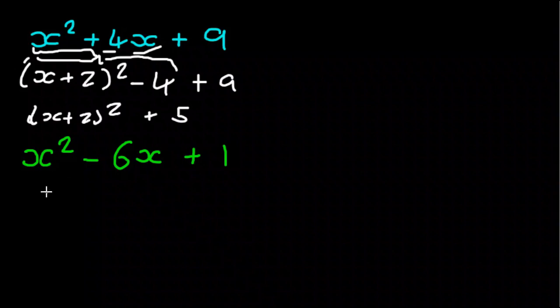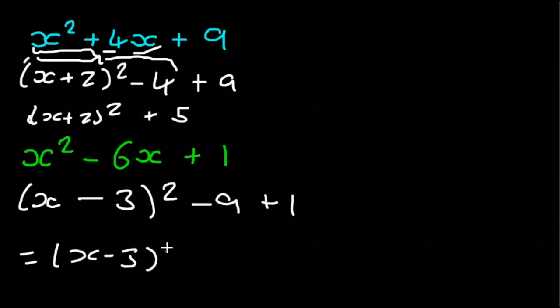Negative sign doesn't change the technique. We half that coefficient. This gives us x squared minus 6x plus 9. So we take the 9 off and we have the plus 1. So that gives x minus 3 squared minus 8.